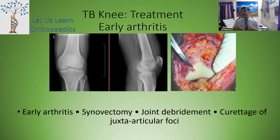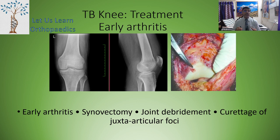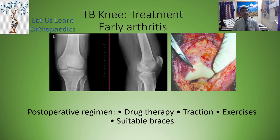If the patient presents in the stage of early arthritis (second stage), the treatment includes synovectomy, joint debridement, and curettage of the juxta-articular foci. The postoperative regimen includes drug therapy, traction, exercises, and suitable braces.